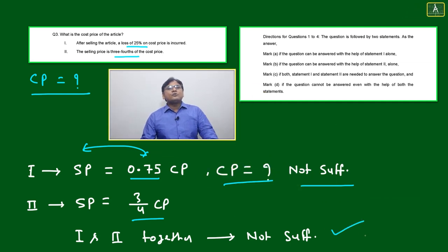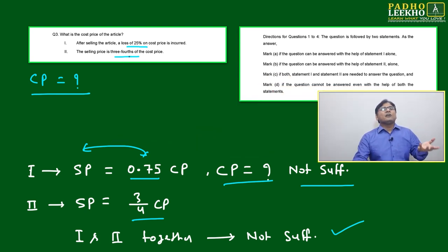One and two, if you are putting together, then also not sufficient, because both statements are the same, only it is rephrased. Statement one is telling loss of 25 percent. Second is telling selling price is three-fourths of the cost price. Both are mathematically the same, but it is rephrased in different ways.